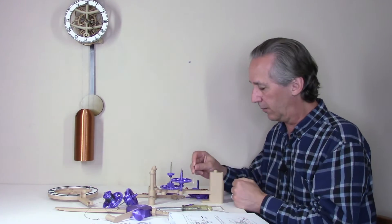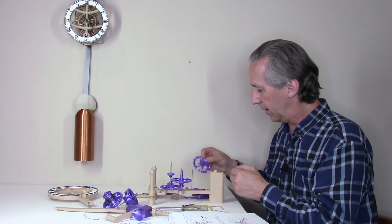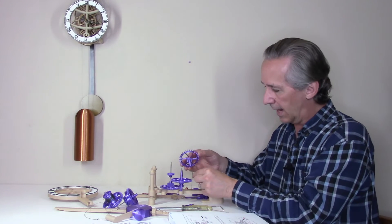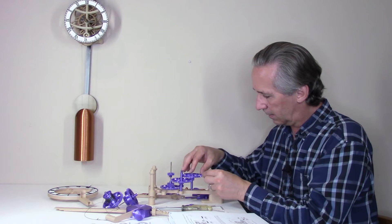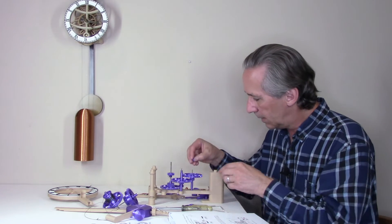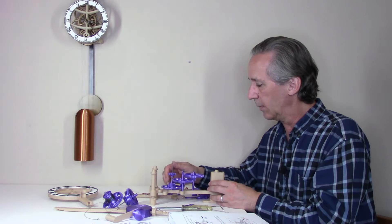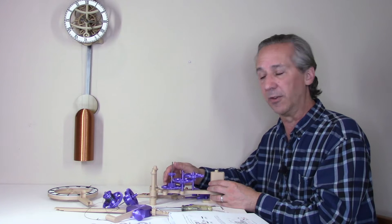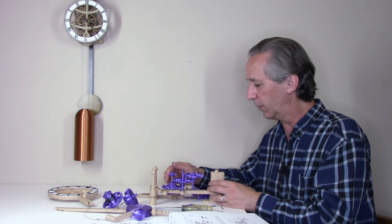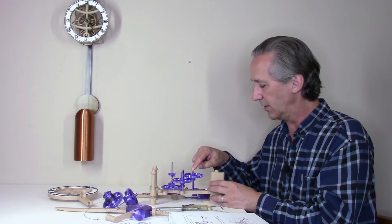Now it's time for the escapement. Add an arbor, add the escapement, and then a small spacer. Everything still spins easily, although it takes a little bit more force because of the gear ratios.